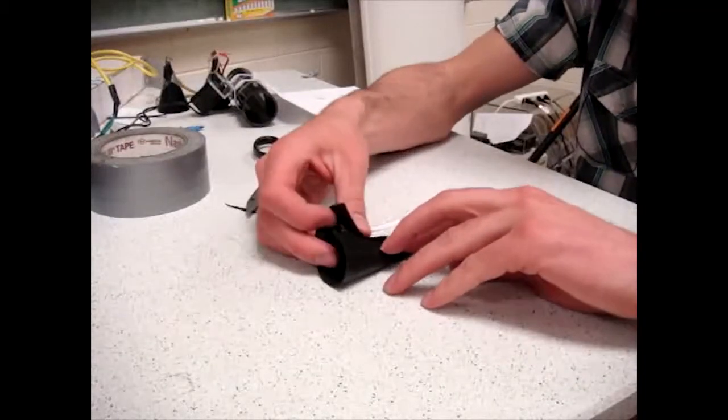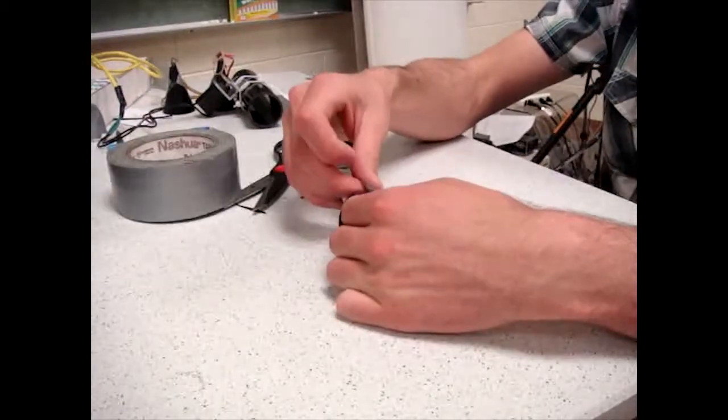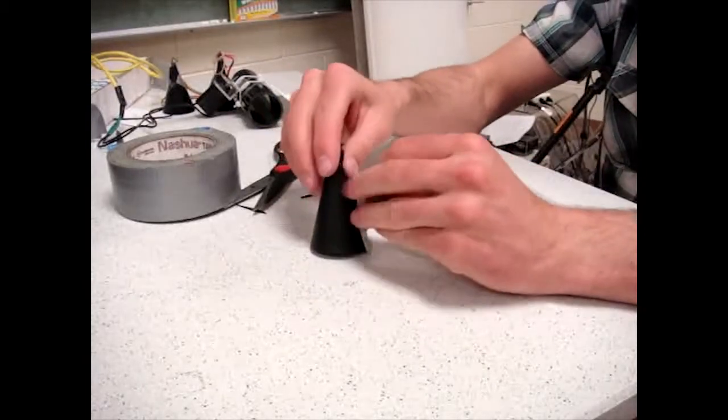After you have cut out the rubber, you will want to roll the rubber up into a cone shape and glue it together. The glue, if you are using hot glue, will probably not hold strong enough and you will also want to use duct tape.